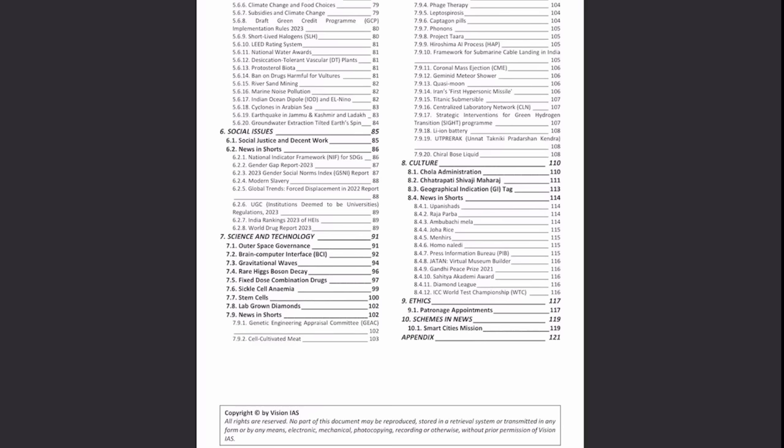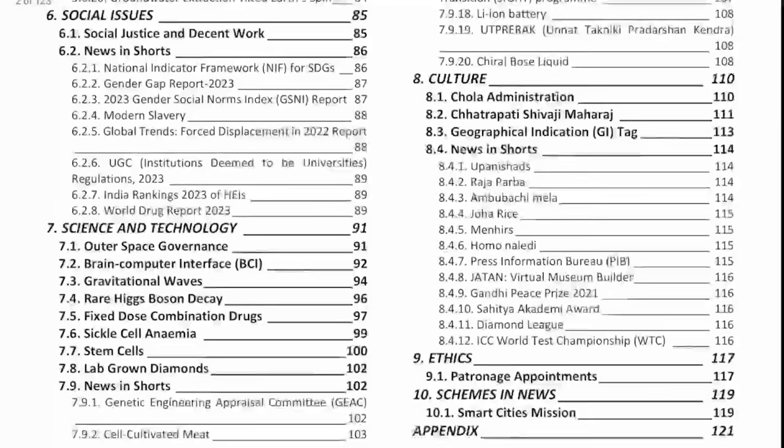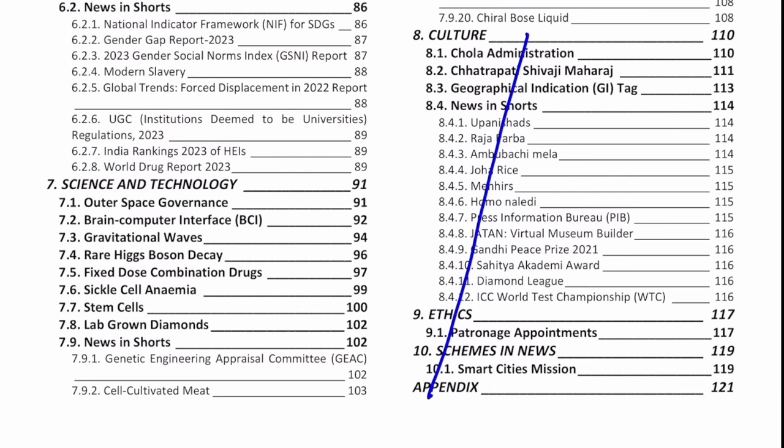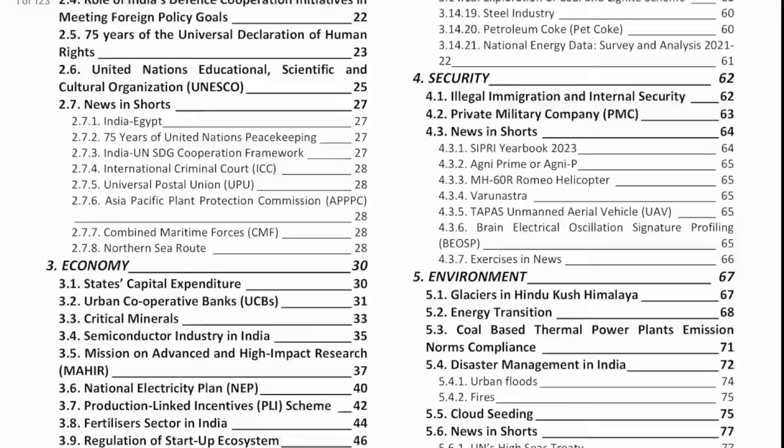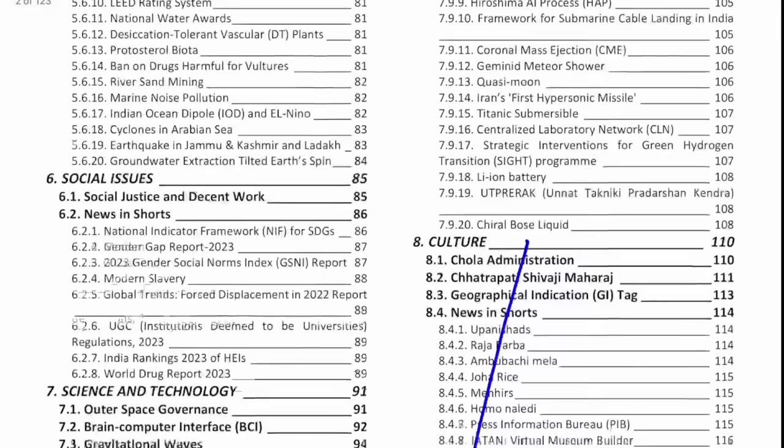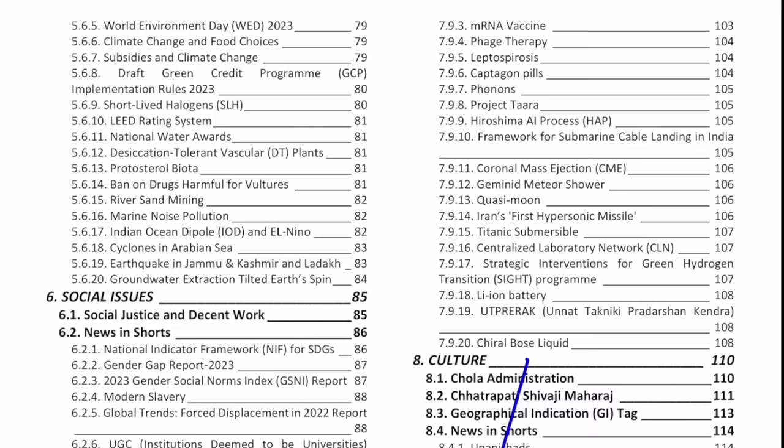The last disclaimer is that when we are looking at this monthly magazine, I will not be covering the part which includes culture, ethics and schemes, because this is not something that I would myself read. If you want to read, you can, but generally culture, ethics and schemes is not something we read for current affairs anyway. We will be covering everything from polity, international relations, economy, security, environment, social issues, and science and technology. The other parts I would expect you to read up on yourself. So let's get started with the first thing, which will be polity.